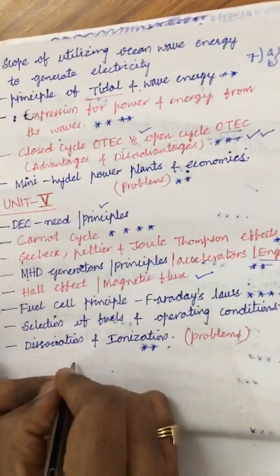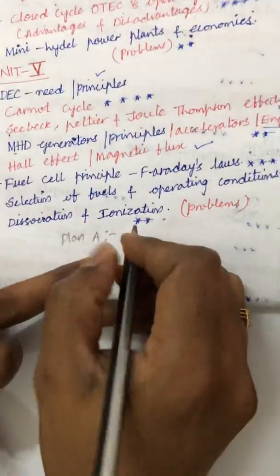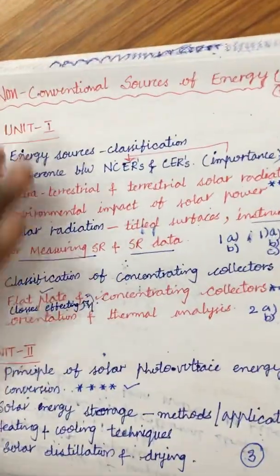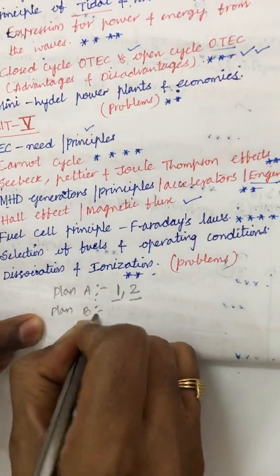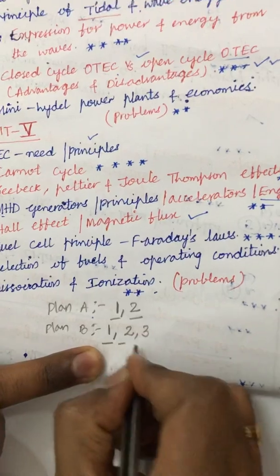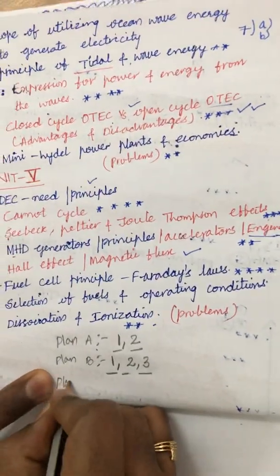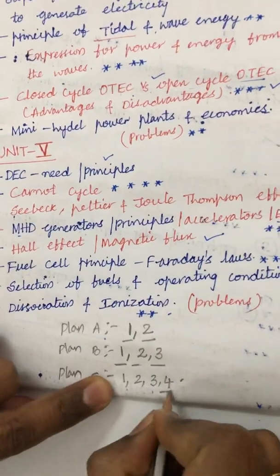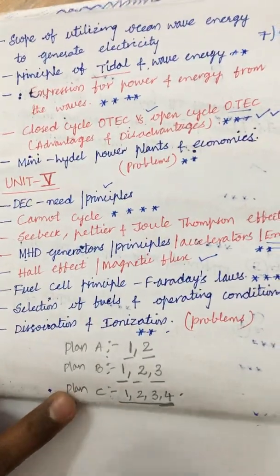Now I will give you three study plans to score better marks. Plan A — students who find it difficult and just want to pass should cover Units 1 and 2 completely; the topics I covered are sufficient to attempt 3 or 4 questions. Plan B — students aiming for a better percentage should cover Units 1, 2, and 3 thoroughly, so that even if something is missing you can answer at least 5 questions. Plan C — students planning for a high percentage should cover Units 1, 2, 3, and 4, since you are already working out 2.5 units and Unit 4 for the second mid examination — do not skip any topic.